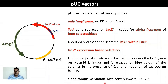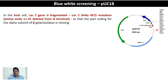pUC vectors are high copy number plasmids — each cell can contain as many as 500 to 700 pUC plasmids. pUC vectors work with modified host cells that carry a deletion in the lacZ gene, ensuring that the alpha fragment is not synthesized from the host cell and only the omega fragment is produced by the host.